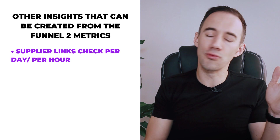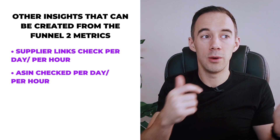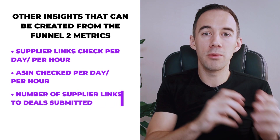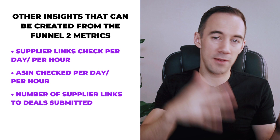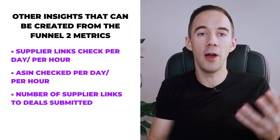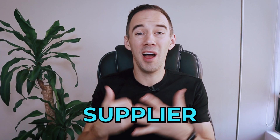From those five numbers, we can actually get some other insights to help us really start seeing how good a supplier is. Supplier links checked per day or per hour gives us a measure of VA performance and how long it takes to analyze a list. ASIN checks per day and per hour also helps us understand VA performance metrics. We're going to look at number of supplier links to deals submitted — this tells us if it's a good supplier or maybe a bad one and if we should skip them. Finally, number of supplier links to good deals gives us another metric to help improve our conversion rate.